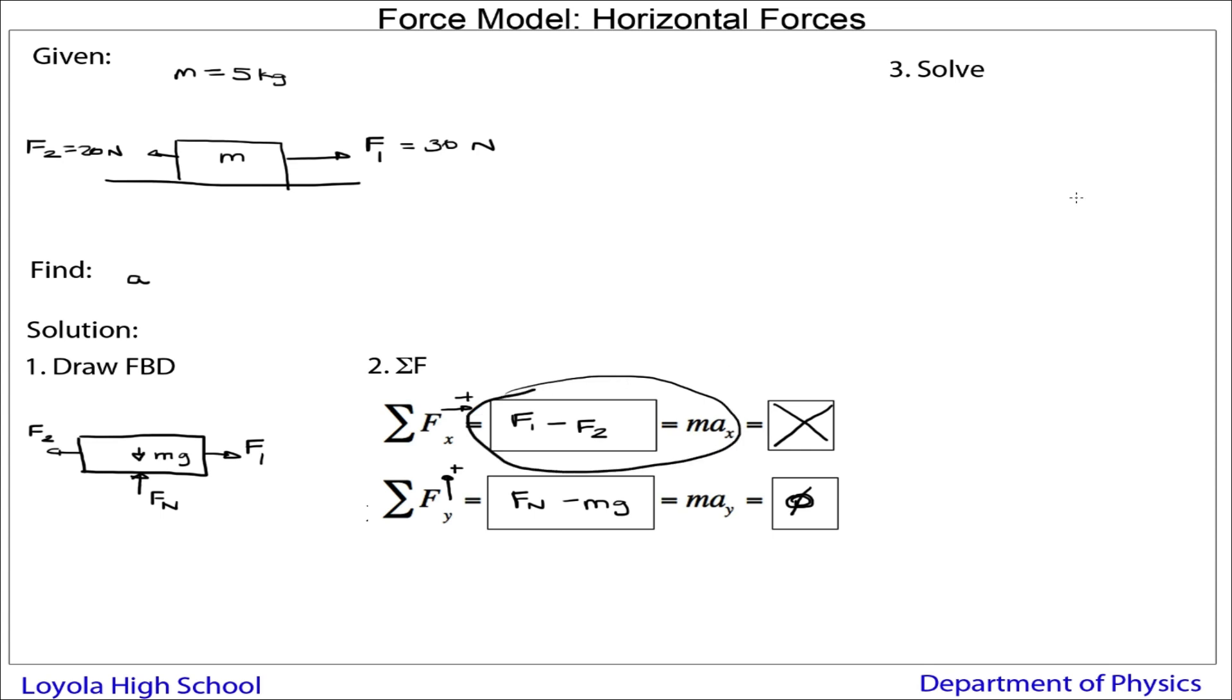So if I go up here to the solve part up top, I have F1 minus F2 equals ma in the x direction. Therefore, the acceleration in the x direction is equal to F1 minus F2 all over mass. Now we plug in the numbers. So I'm going to have 30 minus the 20 for the other force over 5, which math-wise is 10 over 5, or 2 meters per second squared. That's my final answer. Inbox your final answer.